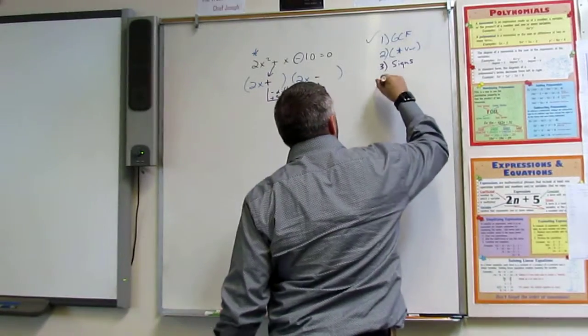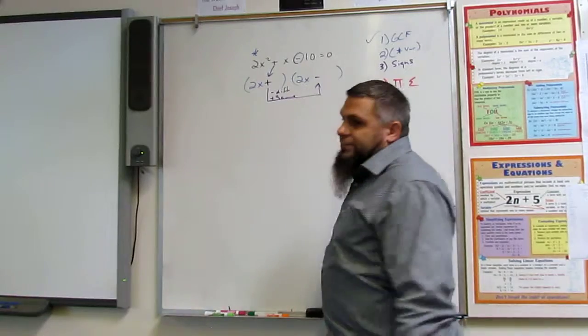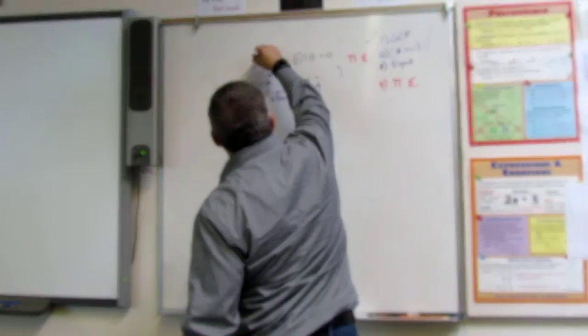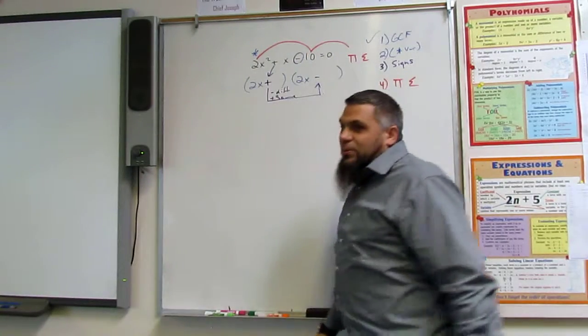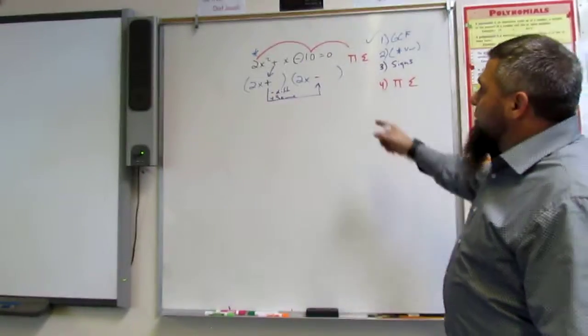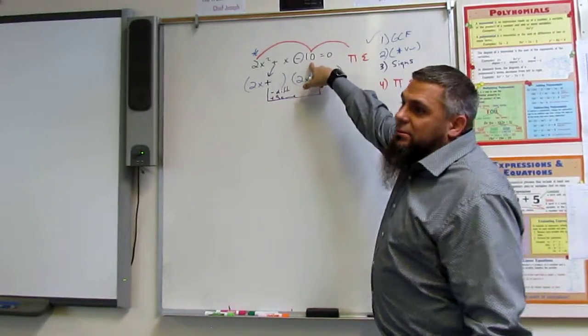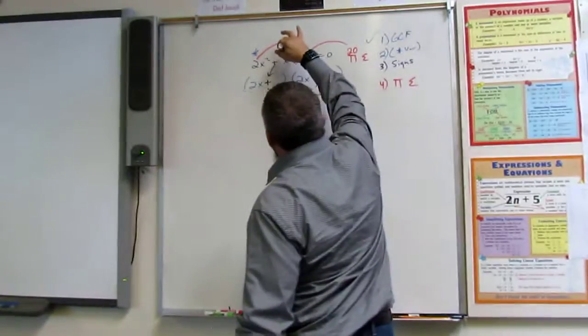Step 4. Step 4 is product and sum. Okay? Product and sum. The product is 2 times 10. Focus on this one. 2 times 10 is what? 20. Okay?